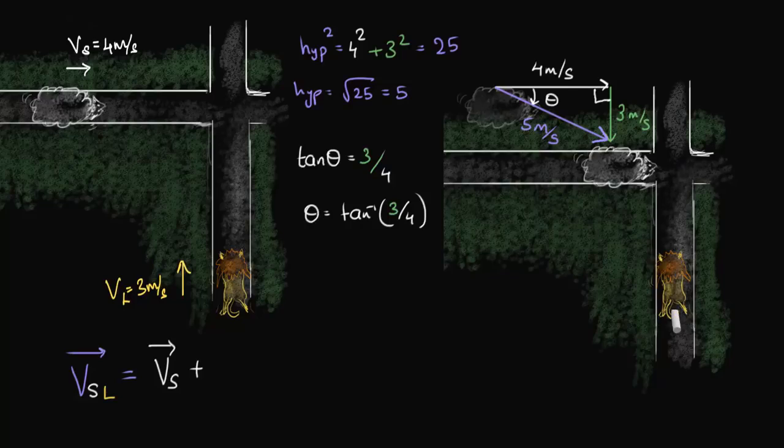So, this would be the negative of the velocity of the lion as seen from the ground. And there we have it. This is a general result.